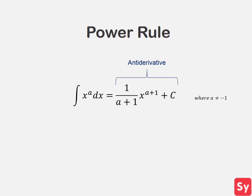It can't equal negative 1 because then we would have to use a natural log rule, which we'll get to a little later. We can check that this rule is true by taking the derivative of the antiderivative, which equals the integrand.